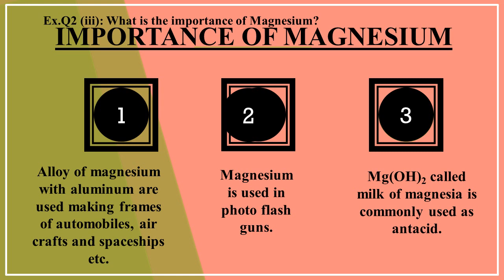Importance of magnesium: the alloy of magnesium with aluminum is used for making frames of automobiles, aircraft, and spacecraft, because both are lightweight metals. Magnesium burns with a very bright flame in the presence of oxygen, so it is used for making photo flash guns. A compound of magnesium called milk of magnesium is used to treat stomach acidity.